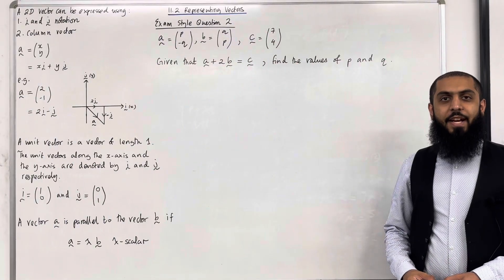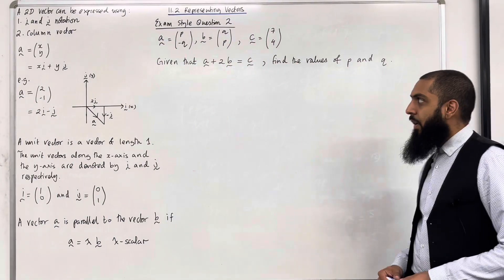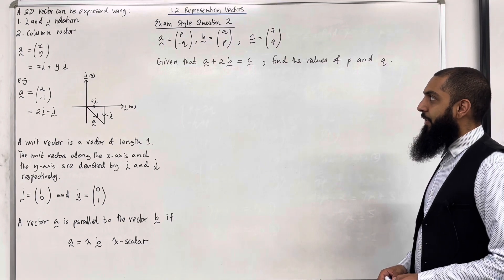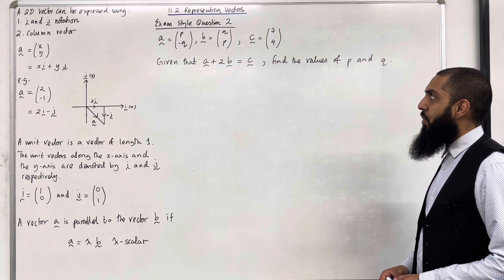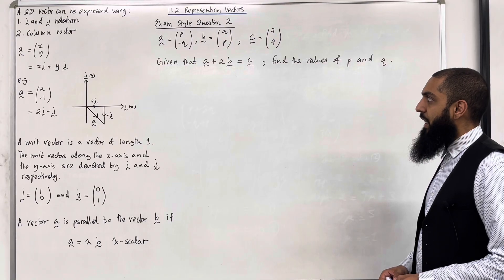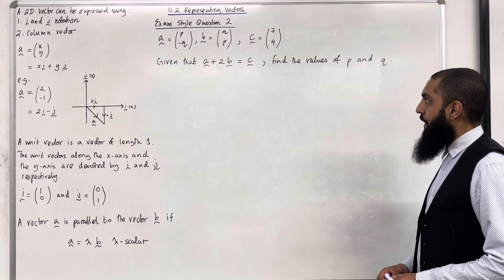Let's have a look at exam-style question 2. The vector A equals (p, -q), the vector B equals (q, p), and the vector C equals (7, 4). Given that A plus 2B equals C, find the values of p and q.